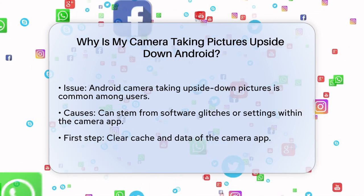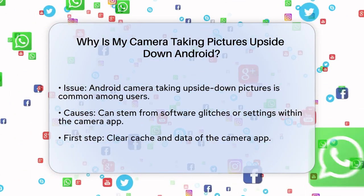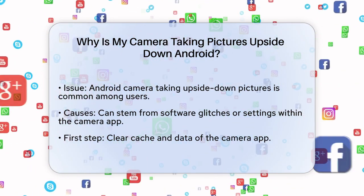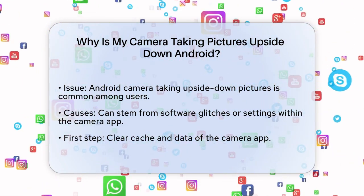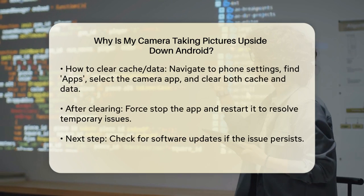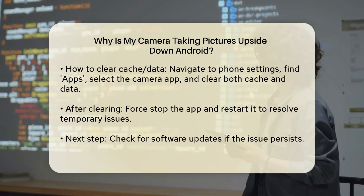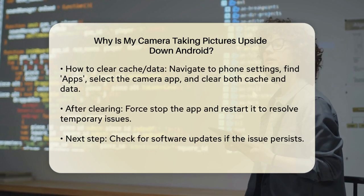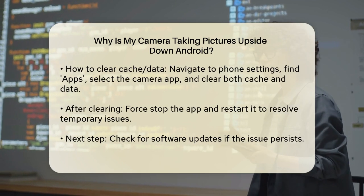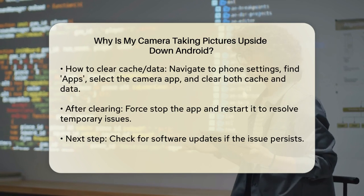To start, you should try clearing the cache and data of the camera app. Go to your phone settings, look for the apps or applications section, and find the camera app that is having the issue. Tap on it, then go to the storage section. Here you will see options to clear the cache and data. Clear both, then force stop the app and restart it. This often resolves the problem by removing temporary issues causing the camera to malfunction.